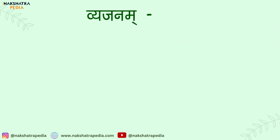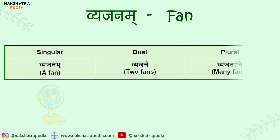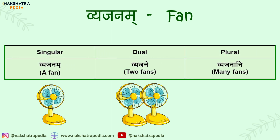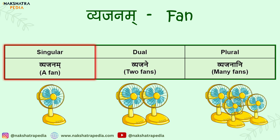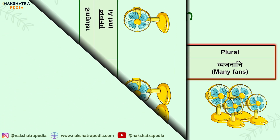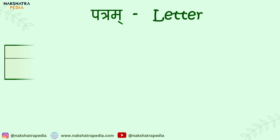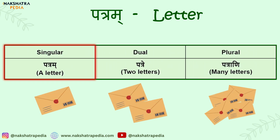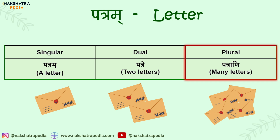Let's take one more example. A fan is called vyajanam in Samskritam. The singular, dual, and plural forms are vyajanam, vyajane, vyajanani. One more example: a letter is called patram. So the forms will be patram, patre — patre means two letters — and patraani means many letters. I hope you get an idea about a few nouns and their forms.